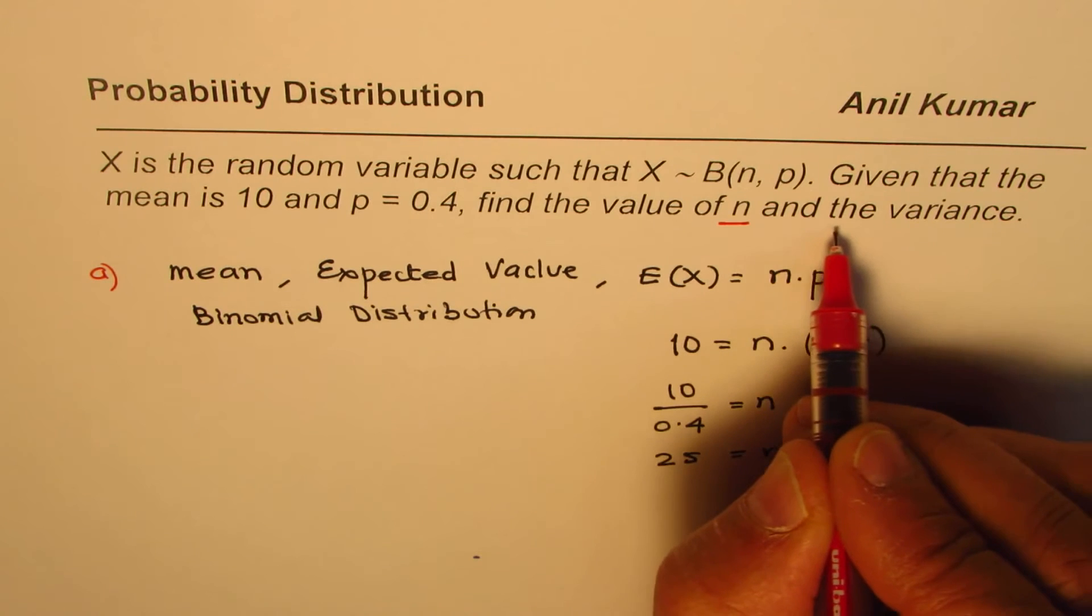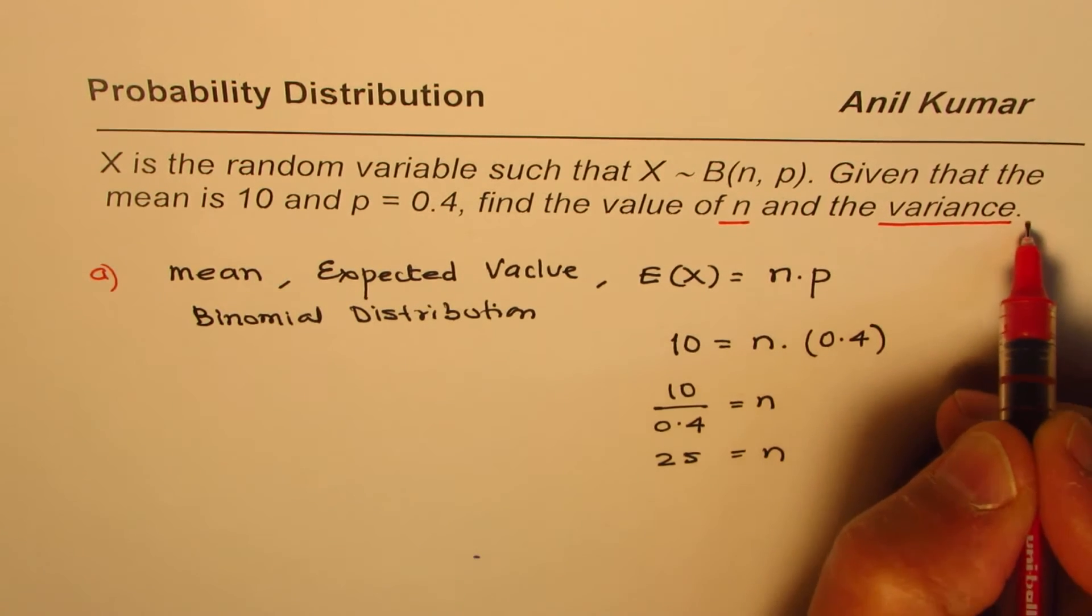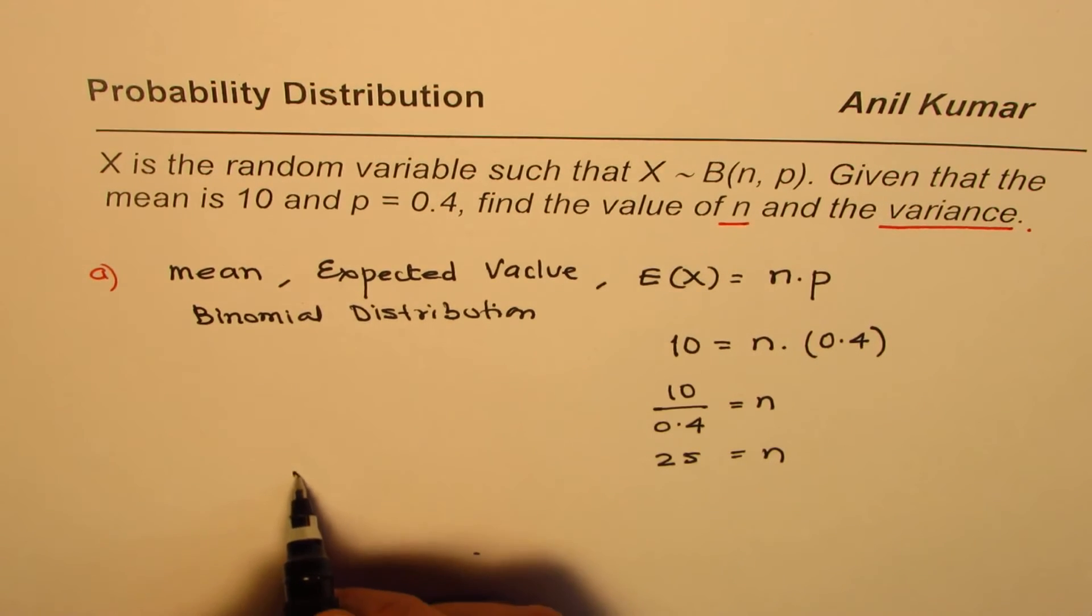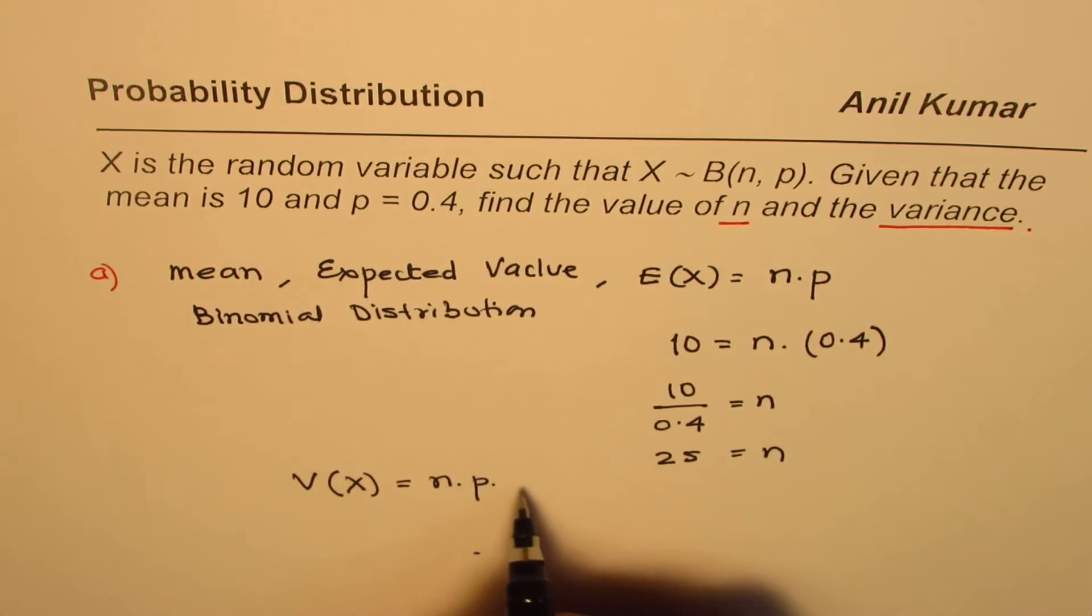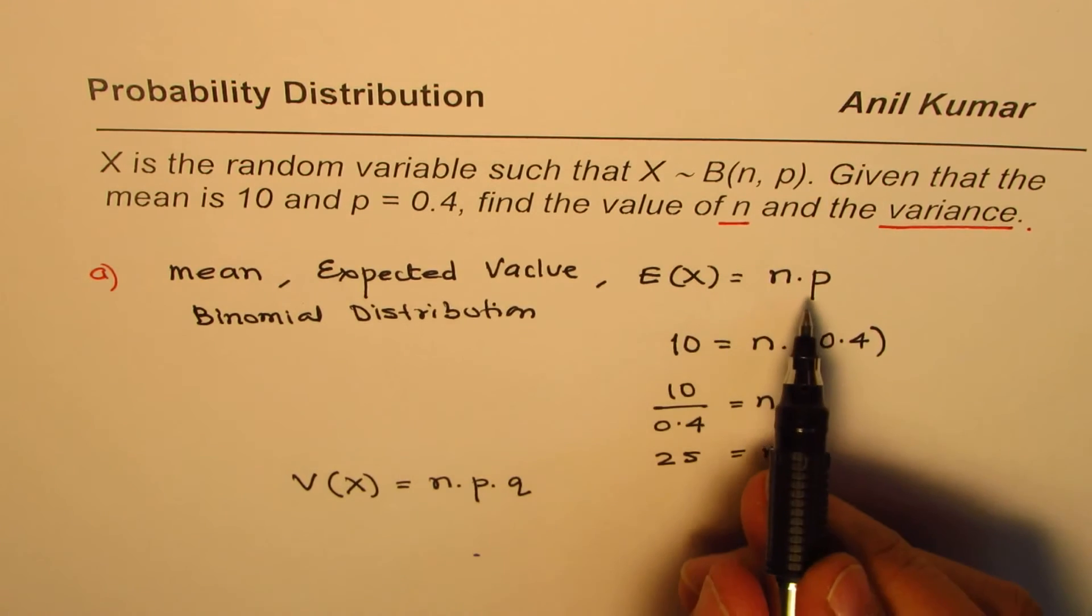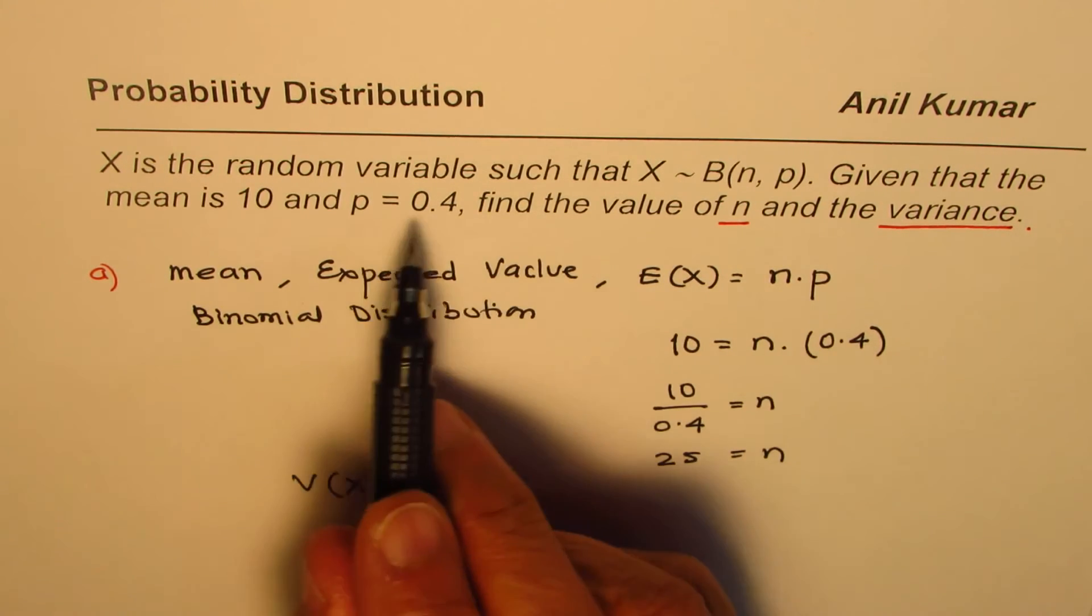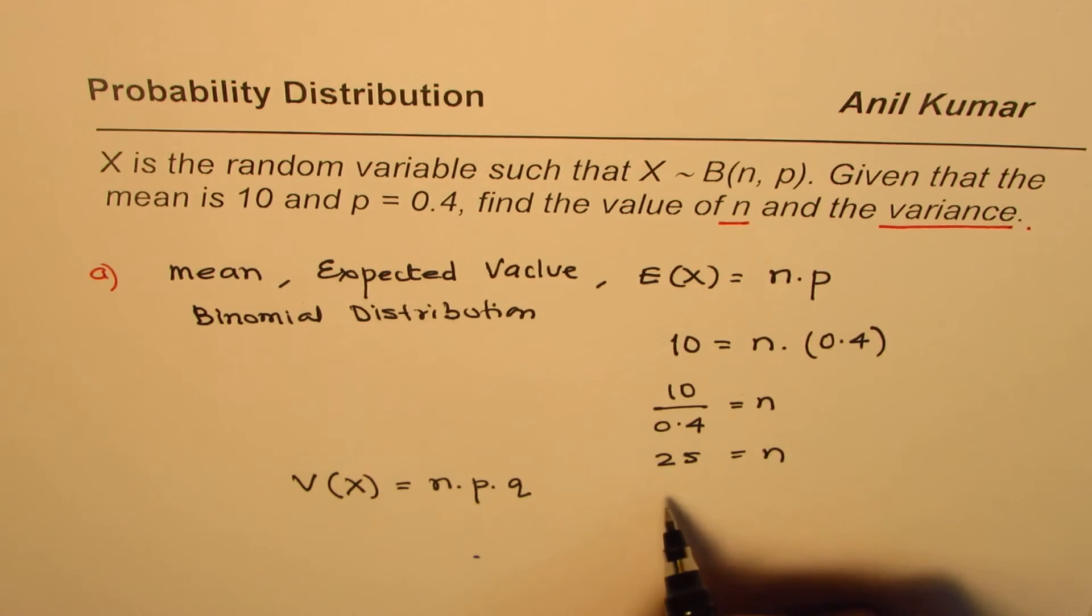Now we need to find the variance. The variance is npq. Now, p is given as 0.4. So what is q? q equals 1 minus 0.4, which is 0.6.